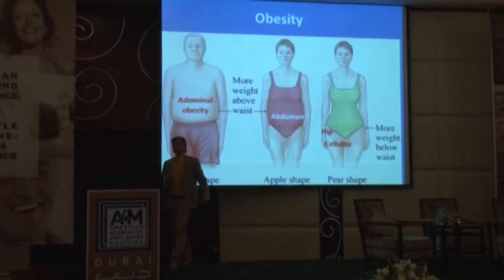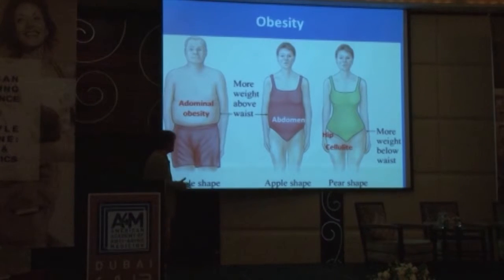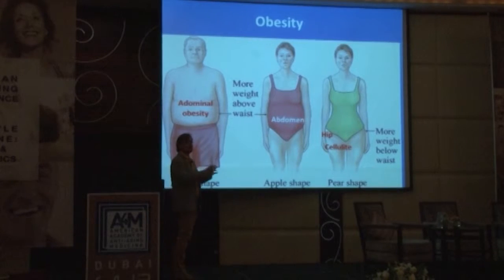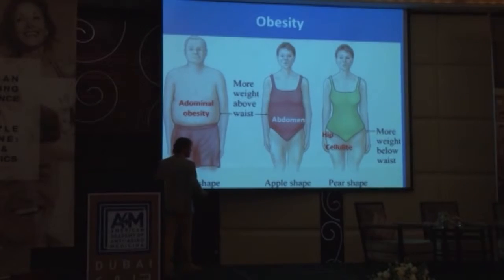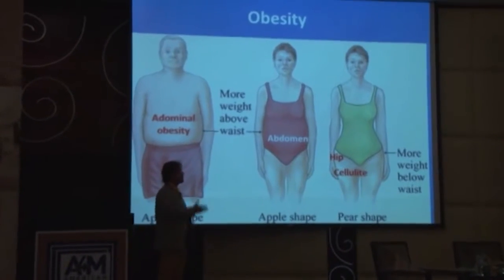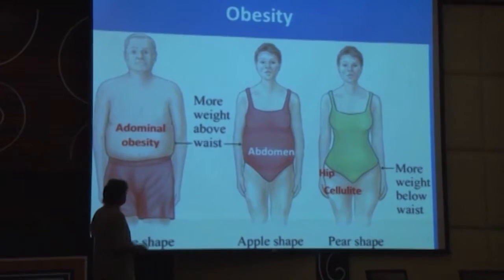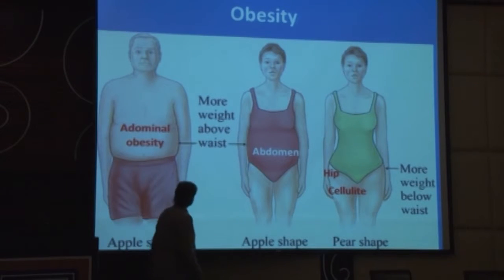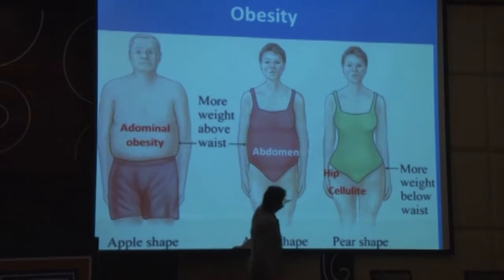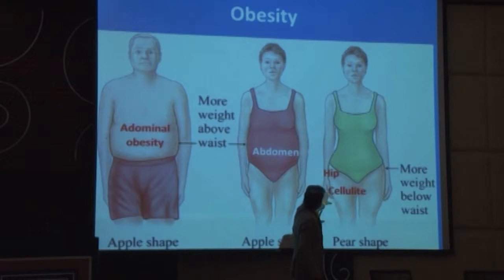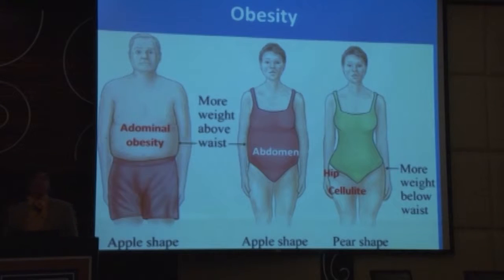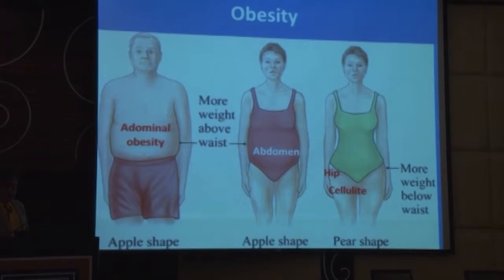Most diseases linked with obesity are usually linked with abdominal obesity, especially visceral fat. The more fat you have inside the abdomen, the more risk you have of cancer, hypertension, heart disease, high cholesterol, diabetes, and other problems. Fat around the hips and thighs, by contrast, is not linked with such a grave risk of disease.